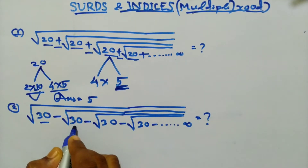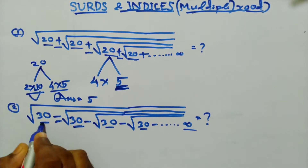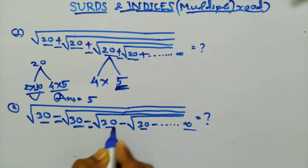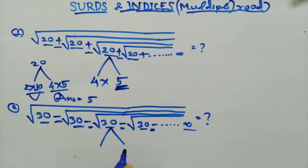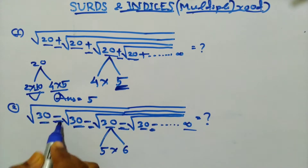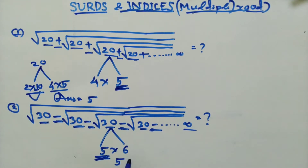Next question: root 30 minus root 30, up to infinity. When all the numbers and signs are the same and the signs are negative, find the consecutive numbers of 30. 30 equals 5 into 6. When all signs are negative, the answer is the smaller consecutive number. Here 5 is less than 6, so the answer is 5.